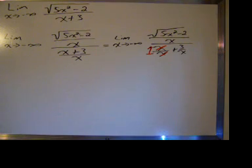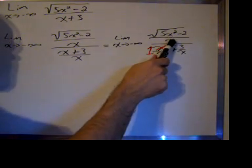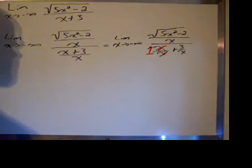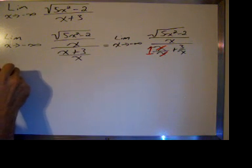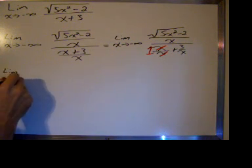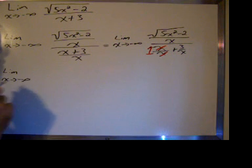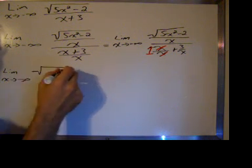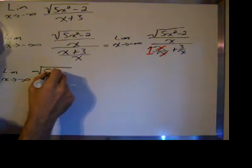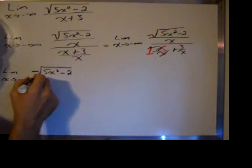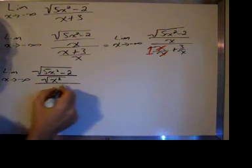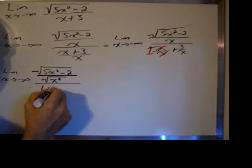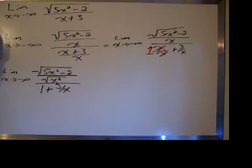So now our issue is getting this x right here in the top denominator under the radical sign. We can do that by writing the square root of 5x squared minus 2 over the square root of x squared, divided by 1 plus 3 over x.